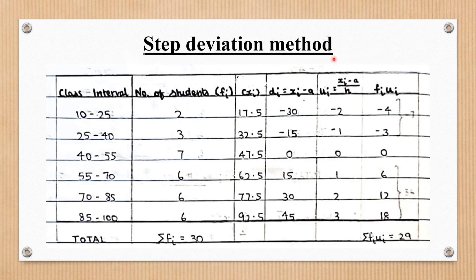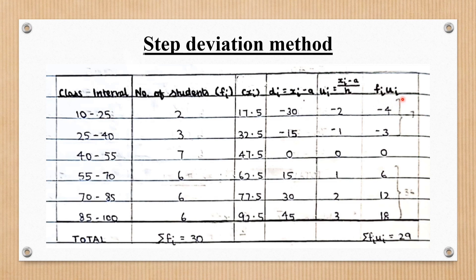The third method is the step deviation method. The table has the same columns as before: class interval, frequency fi, xi, and di. The next column is ui, calculated as (xi minus a) divided by h, where h is the class width — the upper limit minus the lower limit. We find all ui values using this formula. The final column is fi·ui, and we find the sum of fi·ui, which equals 29 for the given table.